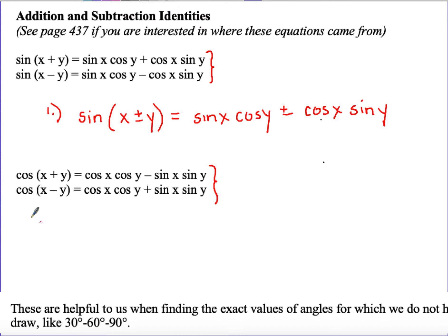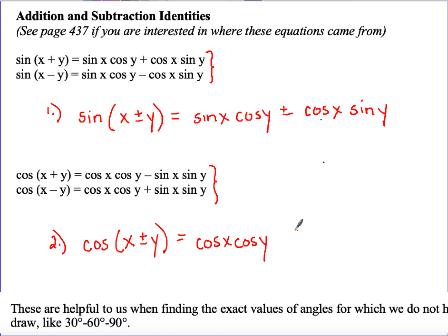The second identity involves cosines. Cosine of x plus y equals cosine x cosine y minus sine x sine y. When we have cosine of x minus y, it becomes cosine x cosine y plus sine x sine y. On the green sheet for option two: cosine of x plus or minus y equals cosine x cosine y minus or plus sine x sine y. Notice that the sign in the expanded form is the opposite of the sign inside the parentheses.